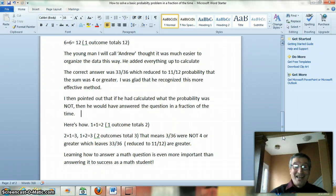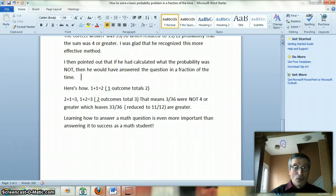I then pointed out that if he had calculated what the probability was NOT then he would have answered the question in a fraction of the time. Here's how. 1+1=2. That's 1 outcome totals 2. 2+1=3. 1+2=3. 2 outcomes total 3. That means 3/36 were not 4 or greater which leaves 33/36 reduced to 11/12 or greater.